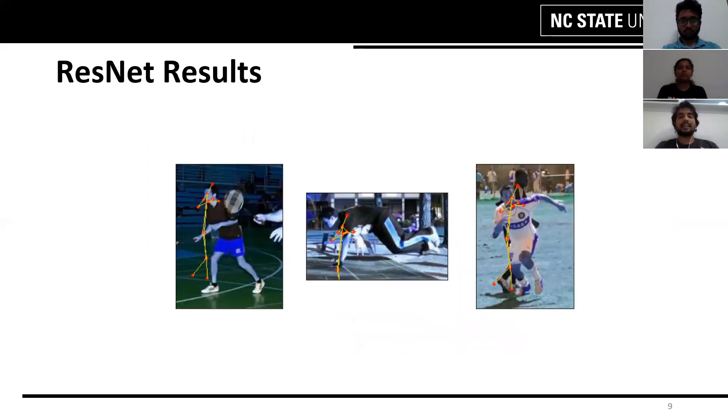Here we see examples of ResNet human pose estimation. We see that in the second image, where the person is horizontally aligned, the model miserably fails whereas for the other two images, the model quite fairly estimates the human pose accurately.